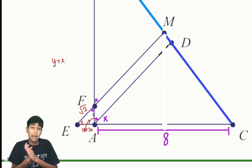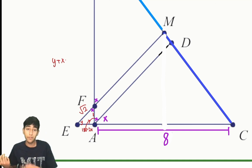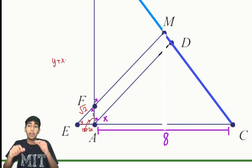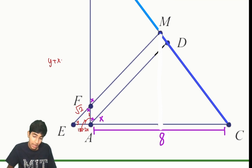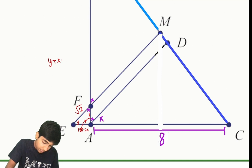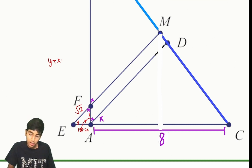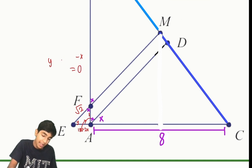We have y plus x plus (180 minus 2x) equals 180. That means y plus 180 minus x equals 180, so y minus x equals 0, which gives us y equals x. When we have complicated diagrams like this, the good approach is using intersecting lines, parallel lines, or even circles with the inscribed angle theorem to get useful angle conditions.